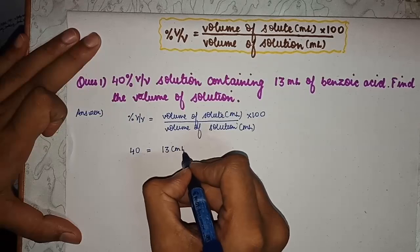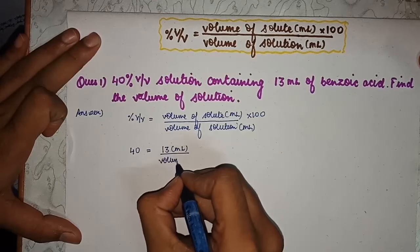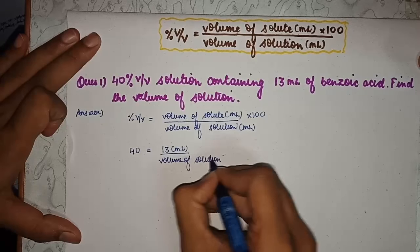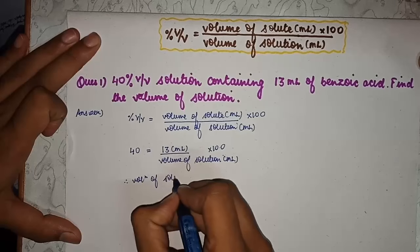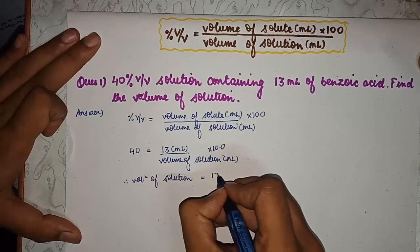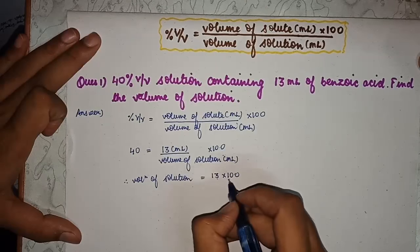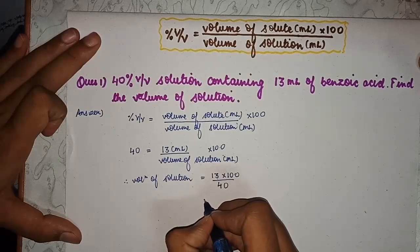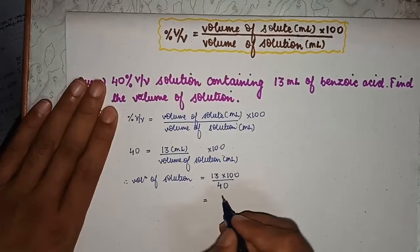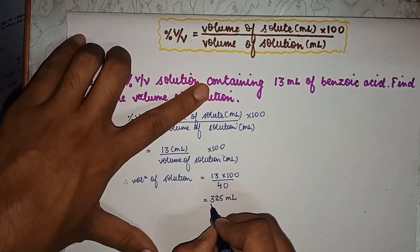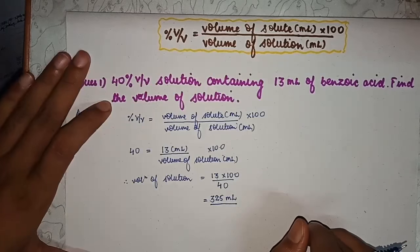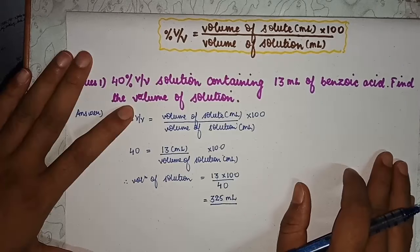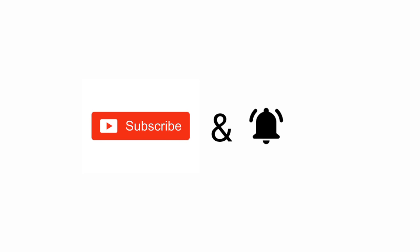Using the formula: 40 equals volume of solute 13 ml, divided by volume of solution x, multiplied by 100. Therefore volume of solution equals 13 multiplied by 100 divided by 40, which equals 325 ml. In part 6 we covered three things: percentage weight by volume, percentage weight by weight, and percentage volume by volume. If you find this video useful, please subscribe and press the bell icon for latest updates.